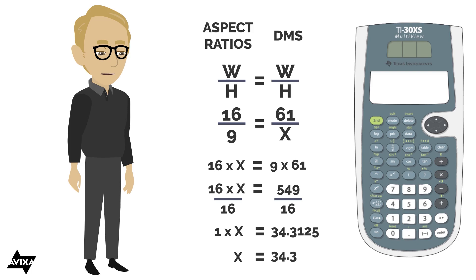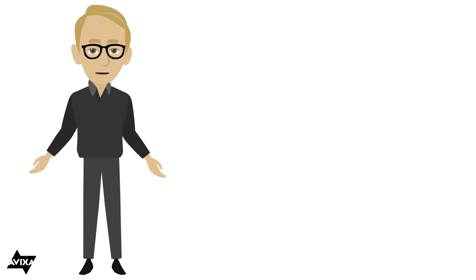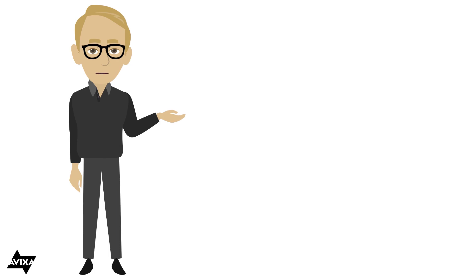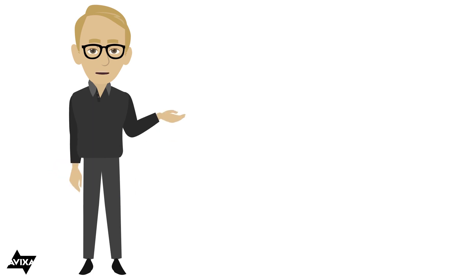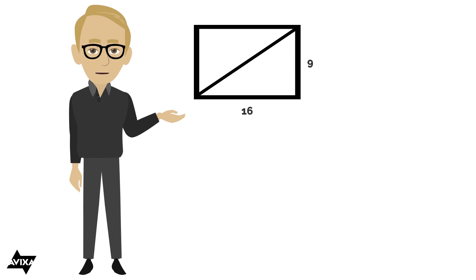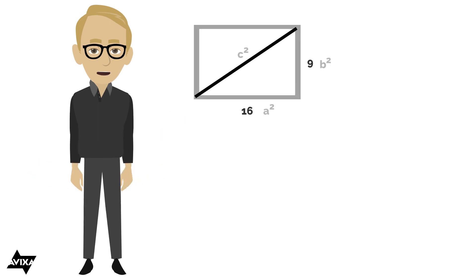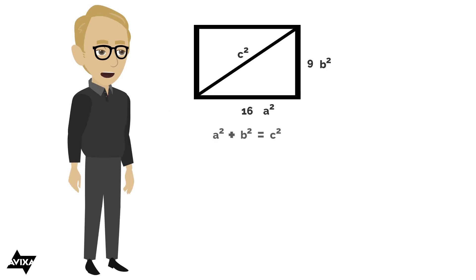We'll use this method for all our aspect ratio calculations. Now, what about the diagonal relationship? Displays are often measured by their diagonal dimension. To find the diagonal proportion for various aspect ratios, we use the Pythagorean theorem. For a 16:9 display — 16 units wide, 9 units high — we apply a squared plus b squared equals c squared.